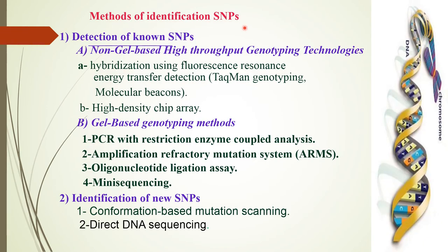Methods of identification of SNPs: there are two types — detection of known SNPs and identification of new SNPs. Detection of known SNPs is further divided into two types: non-gel-based high-throughput genotyping technology and gel-based genotyping methods. In the case of non-gel-based high-throughput genotyping technology, there are two types: hybridization using fluorescence resonance energy transfer (FRET) detection, and high-density chip array.